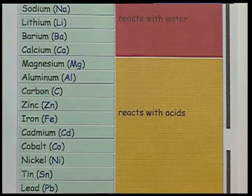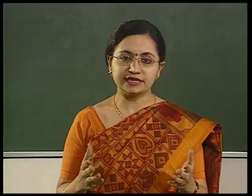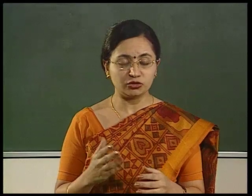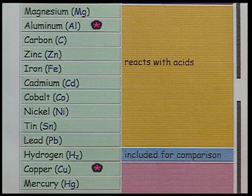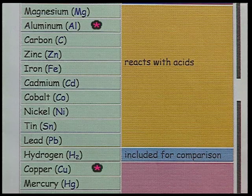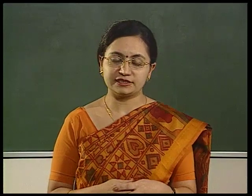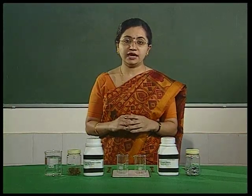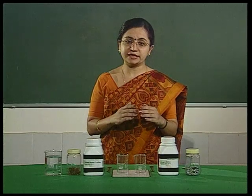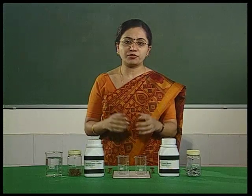The reactivity series helps us to know whether a particular reaction will take place or not. For example, can we store copper sulphate solution in an aluminium vessel? Of course not — aluminium is more reactive than copper, so aluminium will displace copper from copper sulphate solution. From the reactivity series, we know that a more reactive element can displace a less reactive element from its salt solution. To test this, let us perform an experiment.